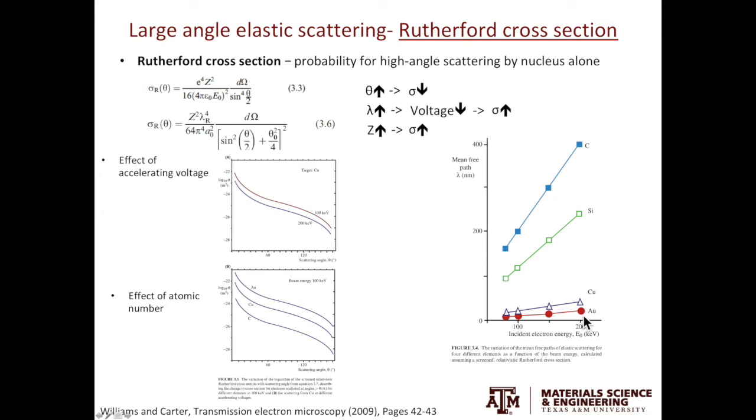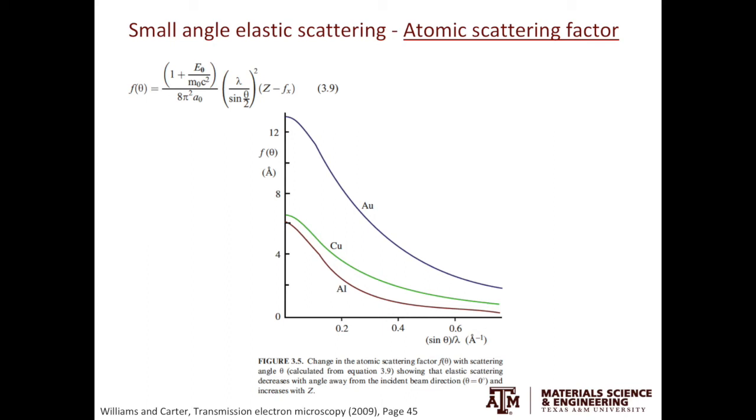When looking at the elastically scattered electrons with small scattering angles, we use a new concept called the atomic scattering factor. In fact, when we talk about electron diffraction, the scattering angles are actually fairly small. The Rutherford cross-section is not appropriate to describe the scattering events. Instead, we need to use the atomic scattering factor. The equation for the atomic scattering factor is kind of complicated. However, if we focus on the three parameters again, theta, lambda, and z, the behavior follows what you've seen in the Rutherford cross-section.